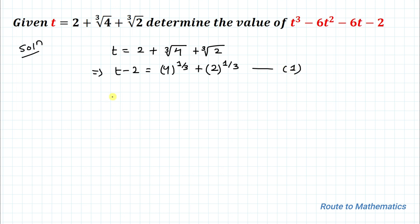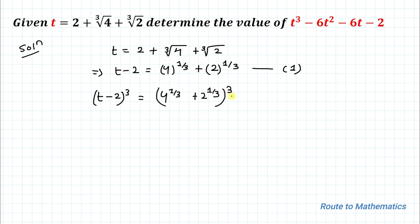In the next step we are going to cube both sides of the equation. So we have (t minus 2) cubed equals (4 to the power 1/3 plus 2 to the power 1/3) cubed.